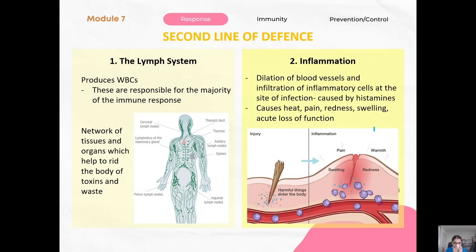The second part of the second line of defense is inflammation — the dilation of blood vessels and infiltration of inflammatory cells. For example, when you injure yourself, histamine is released triggering this response.